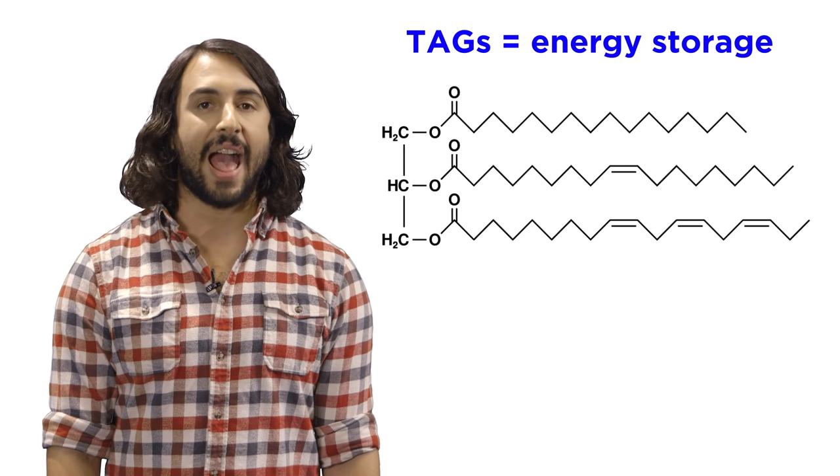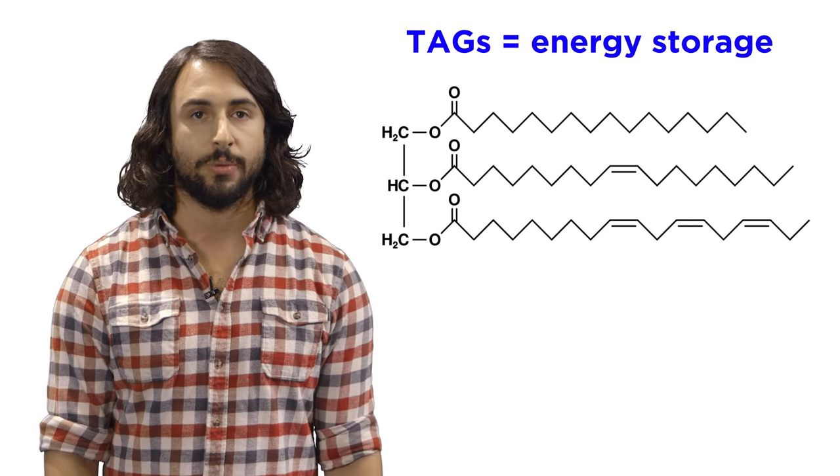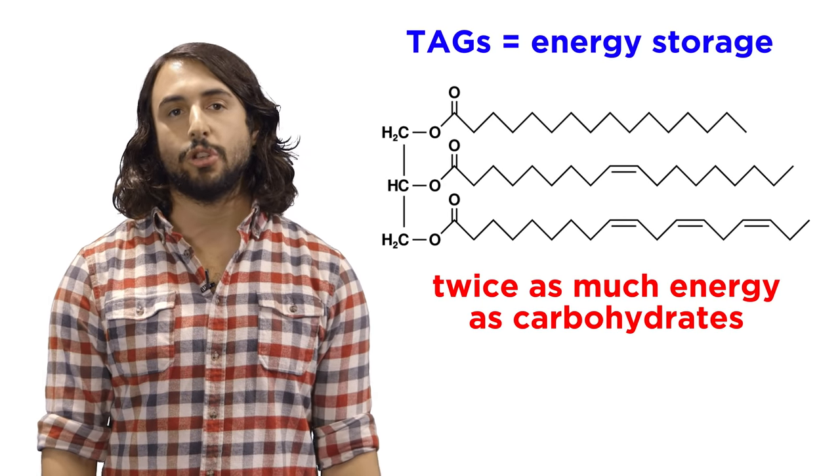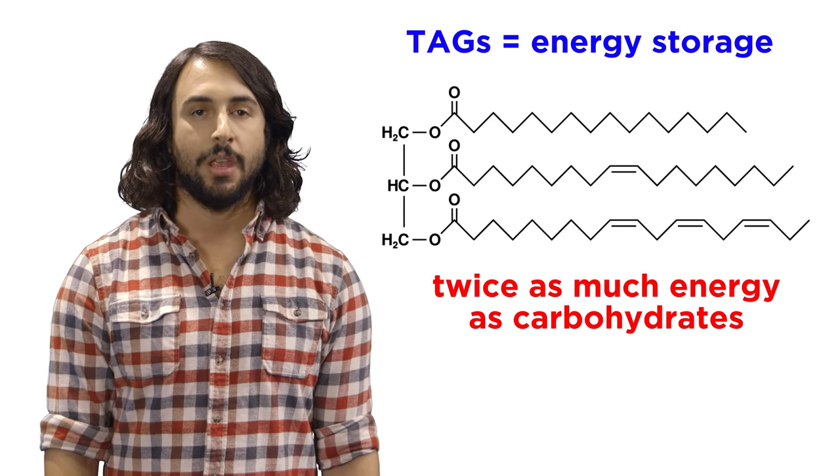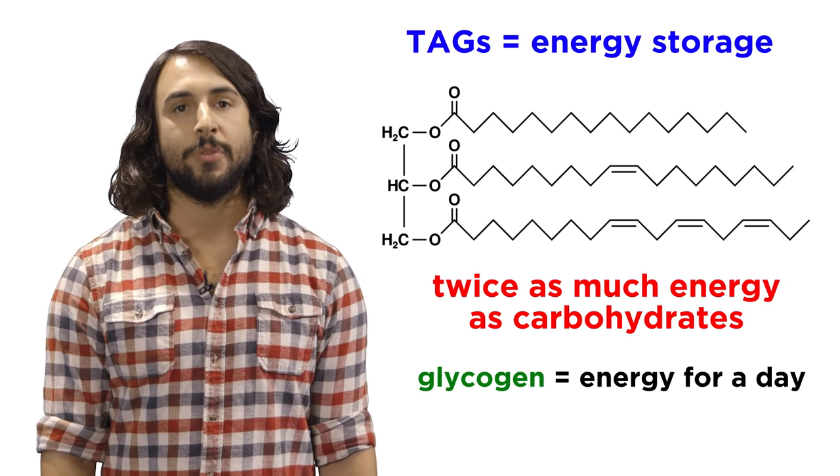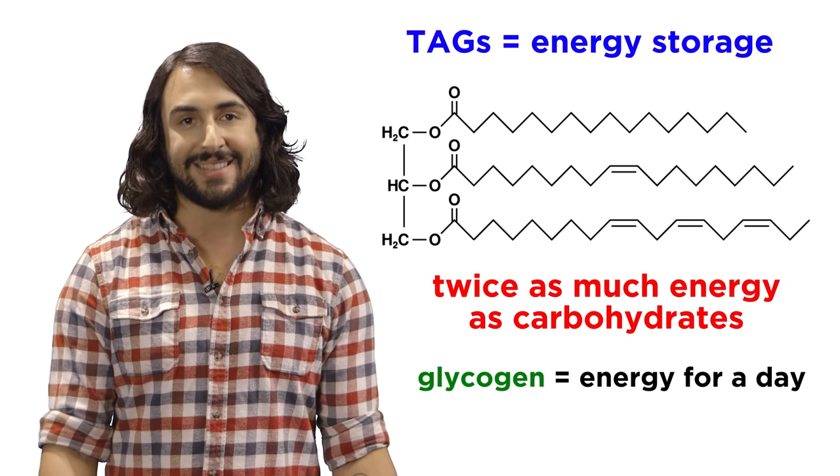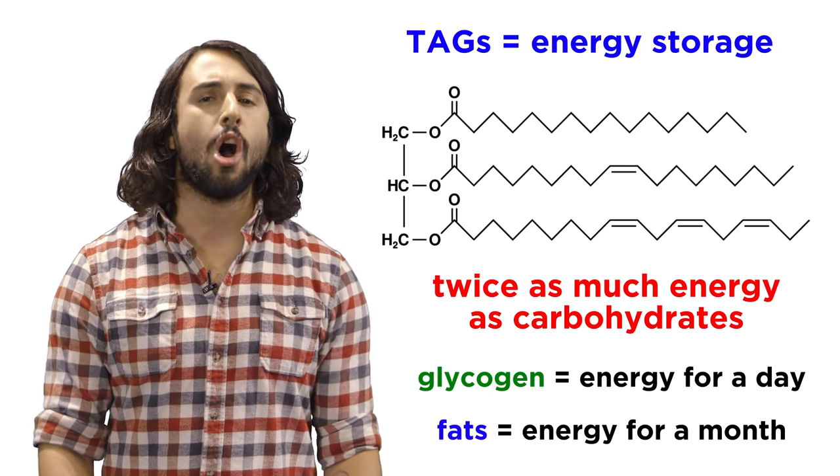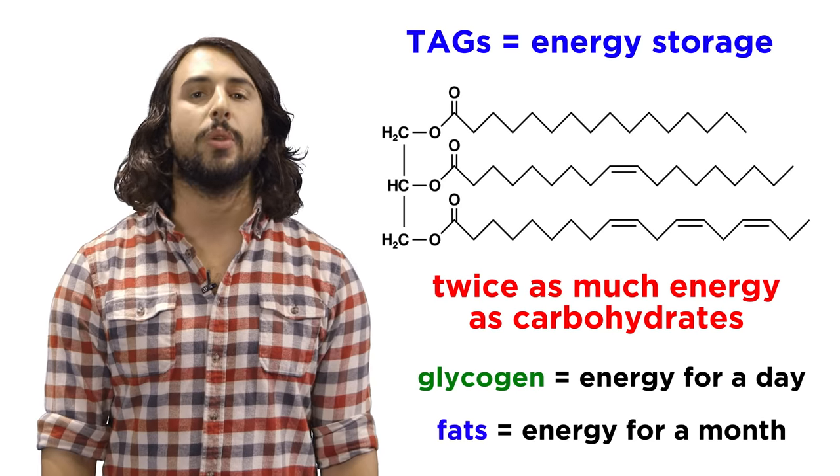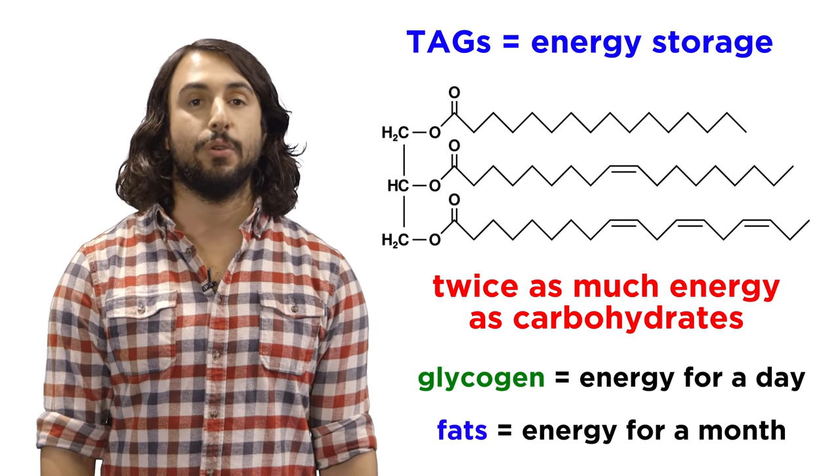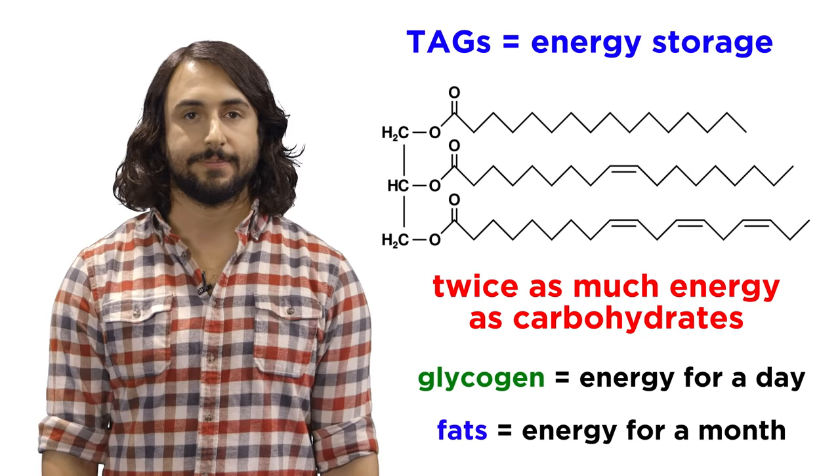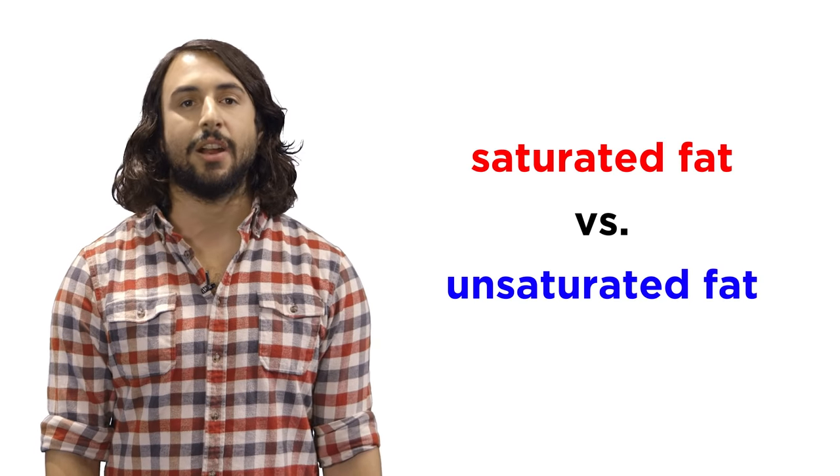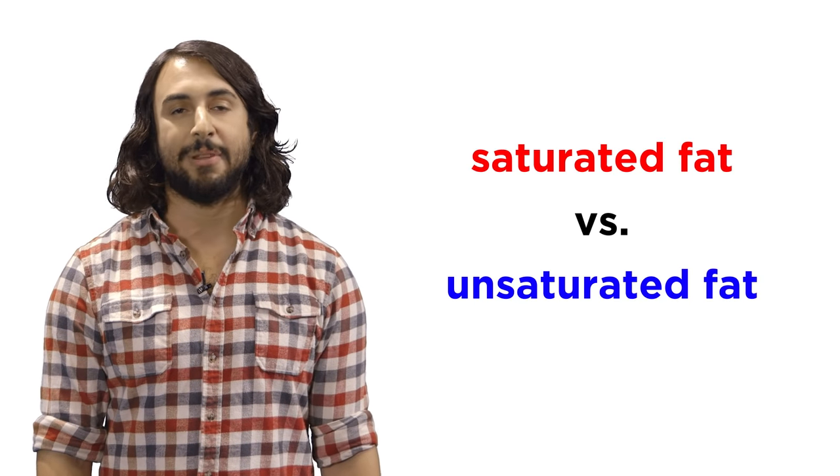In general fats like TAGs are used as energy storage. When these are metabolized in our bodies they release twice as much energy as carbohydrates, since there are so many carbon-hydrogen bonds. Furthermore, polysaccharides like glycogen only provide energy for about a day, whereas the fats we store that make up around twenty percent of our body mass provide long-term energy storage, which would keep us alive for up to a month without any food intake if necessary. Still, there is much discussion about how much saturated fat and unsaturated fat should be in our diet, but we will have to examine that another day.